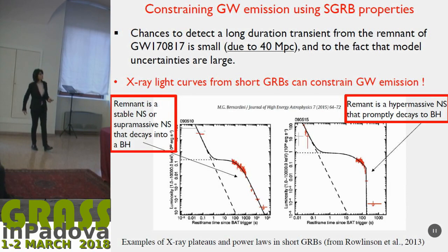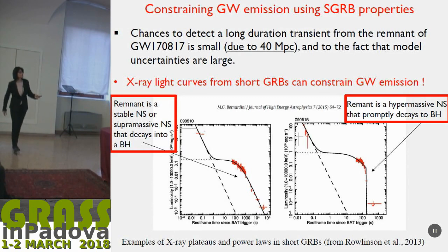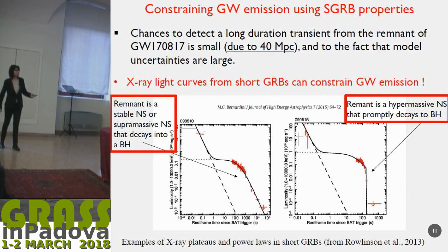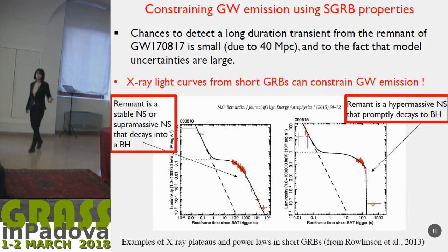The presence of a plateau in the light curve clearly tells us something. From these curve observations, our colleagues can probably tell us the nature of the remnant. Note that the time scales here range from 1,000 seconds to of the order of one day, so the scale is completely different. The slope, the duration of the plateau, and the nature of the plateau might help us in knowing what the remnant is and thus how to do the searches.